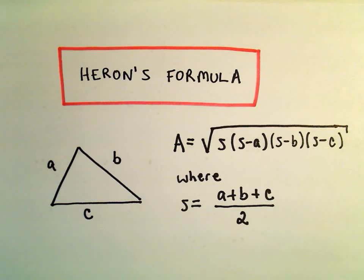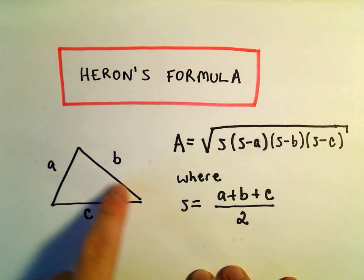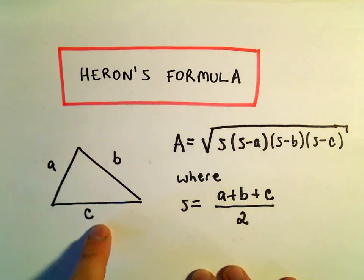All right, in this video we're going to do an example using Heron's formula, and what this is, it's just a way to find the area of a triangle. So if we have a triangle with side lengths A, B, and C,